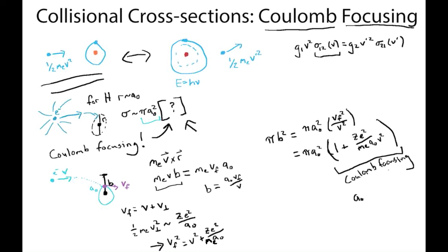So this is the Coulomb focusing factor. And we can use our expression for the Bohr radius: a0 = ℏ²/(ze² mE). So plugging that in, and assuming we're at low enough velocities that we can neglect our plus 1 factor here, we'll get that σ12, which we're approximating as πb², becomes πℏ²/(mE² v²).